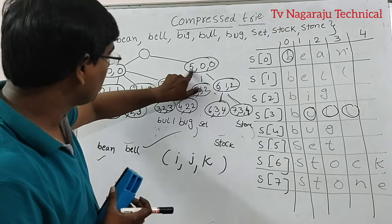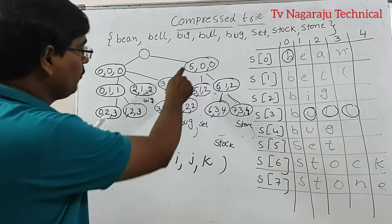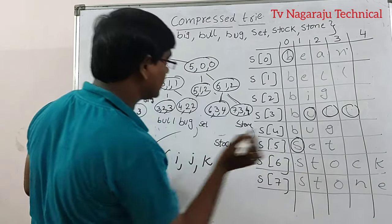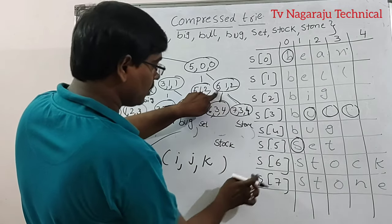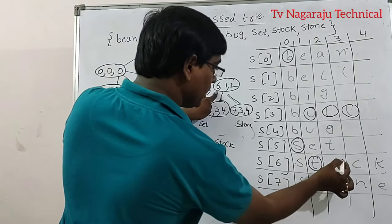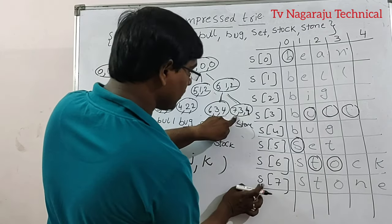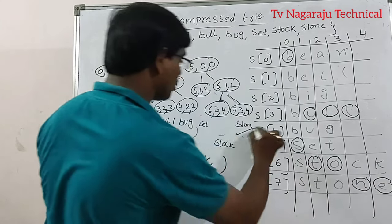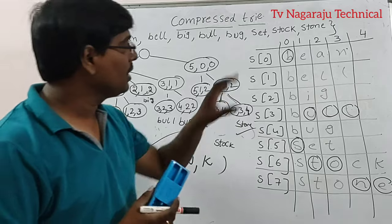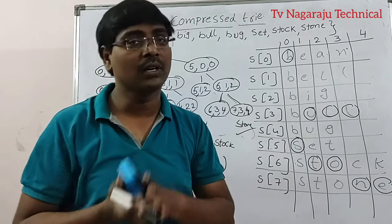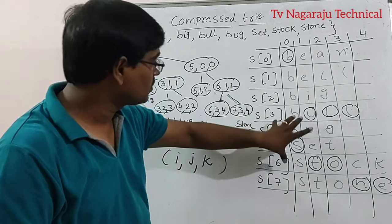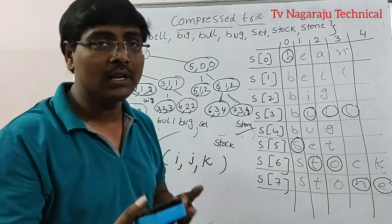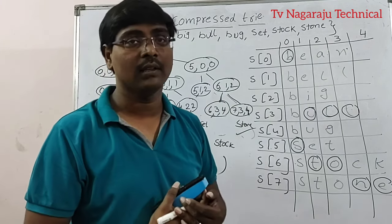Take any path — for example: (5,0,0) → S; (6,1,2) → T, O; (6,3,4) → C, K → stock. In this way, the construction of the compressed trie is very simple, and the compact representation is an optimization of space. In the next session, we are moving to suffix trie. Thank you.